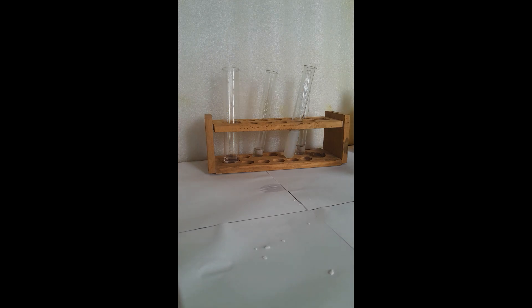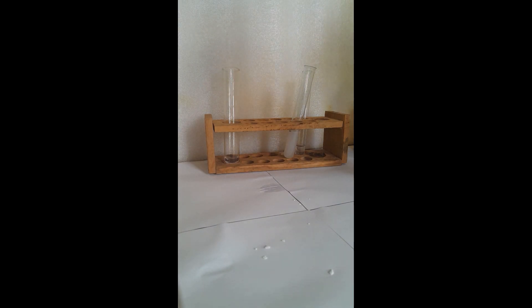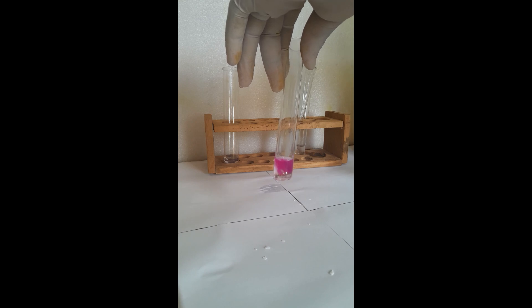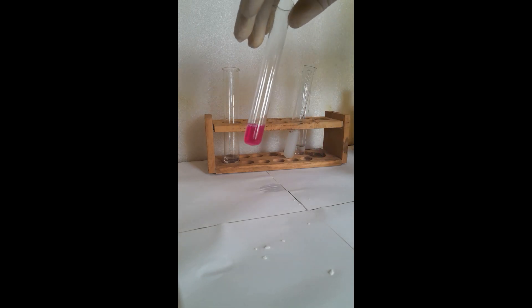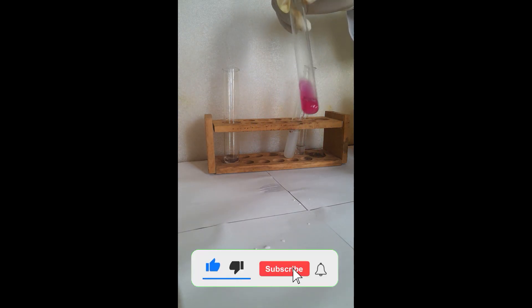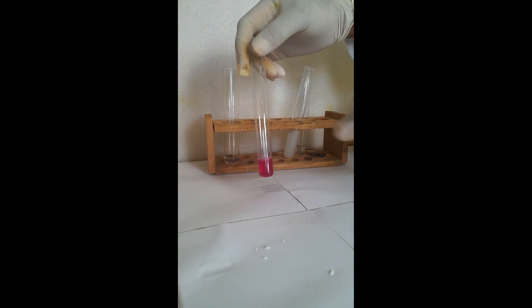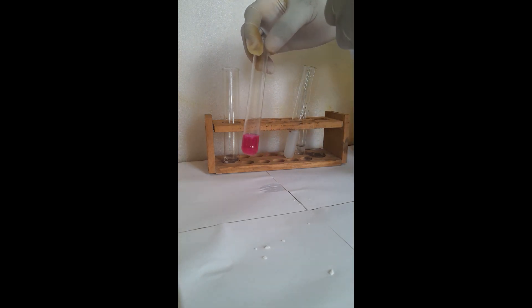The last experiment: let's use phenolphthalein to confirm the presence of CO3²⁻. Adding phenolphthalein — it turns pink. This pink coloration confirms that CO3²⁻ is present. I will leave a full table for your reference after this experiment. Thank you for watching and subscribing — this channel provides outstanding chemistry information. Good luck in your exams.